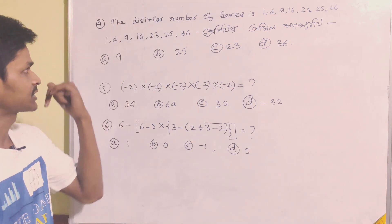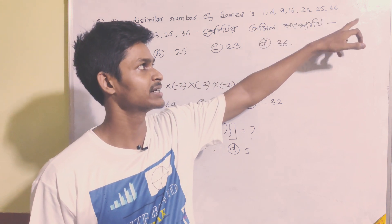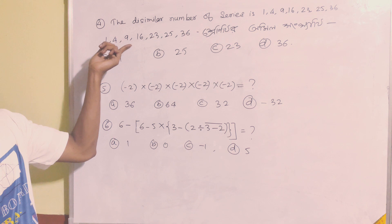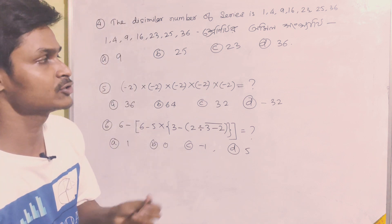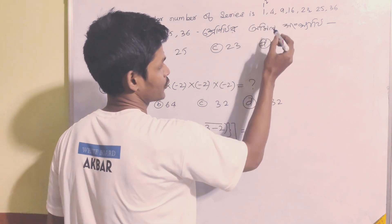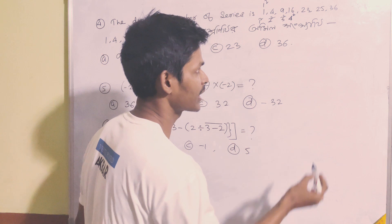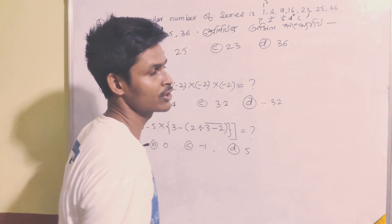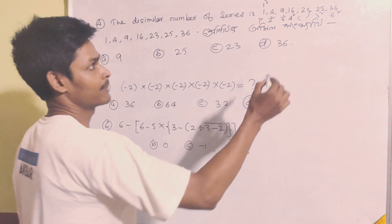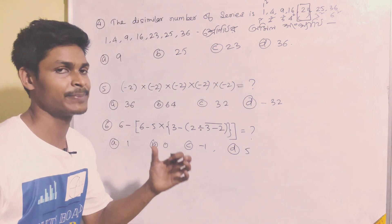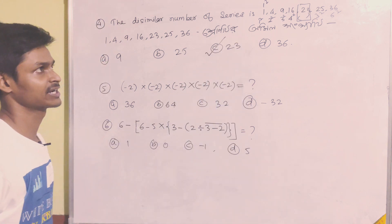Question number 4: find the dissimilar number in the series 1, 4, 9, 16, 23, 25, 36. These are 1 squared, 2 squared, 3 squared, 4 squared, 5 squared, 6 squared — all perfect squares. The number 23 does not fit, so option C, 23, is the correct answer.